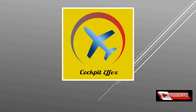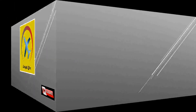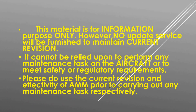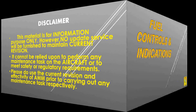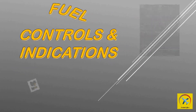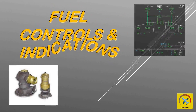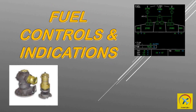In this presentation, we are going to look at Airbus 320 fuel controls and indications. The Airbus 320 consists of five tanks: left inner and outer tanks, right inner and outer tanks, and a center tank, employing a total of six fuel pumps.